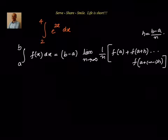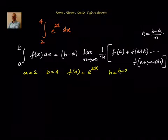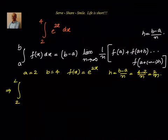Now let's substitute into this formula. We have a = 2, b = 4, f(x) = e power 2x. We also know h = (b − a)/n = (4 − 2)/n = 2/n. Substituting, the integral from 2 to 4 of e power 2x dx equals...